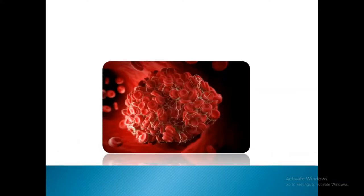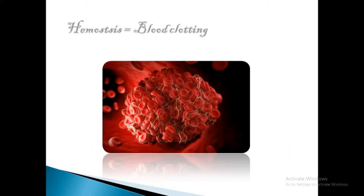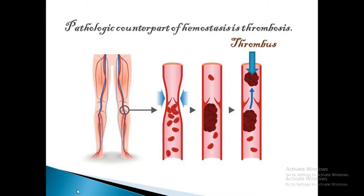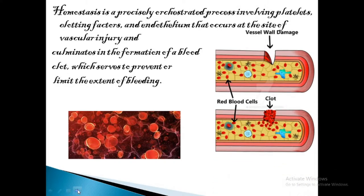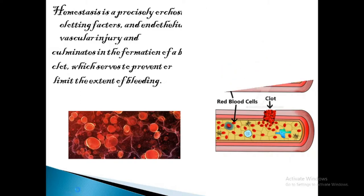Hello everyone, today I am going to talk about hemostasis. Simply, hemostasis means blood clotting. It is generally a physiological process. The pathological counterpart of hemostasis is thrombosis — the formation of a blood clot or thrombus within non-traumatized intact vessels. Hemostasis can be defined as a precisely orchestrated process involving platelets, clotting factors, and endothelium that occurs at the site of vascular injury and culminates in the formation of a blood clot, which serves to prevent or limit the extent of bleeding.